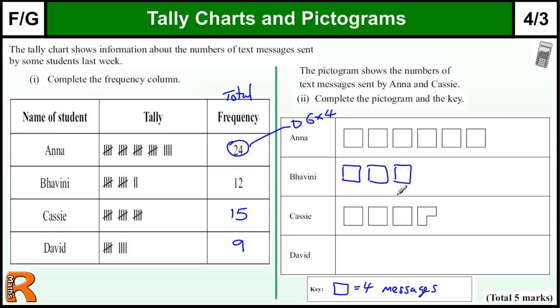For David we need to draw 9, so we go 4, 8, and then we need one little one. Doesn't matter where you draw it, so long it's a little one to make 9.